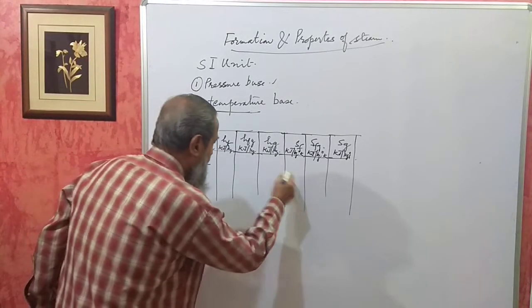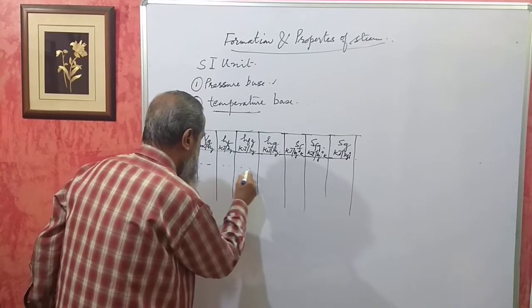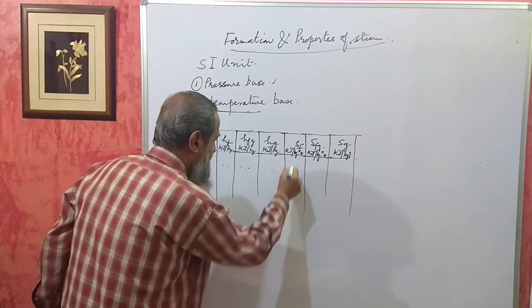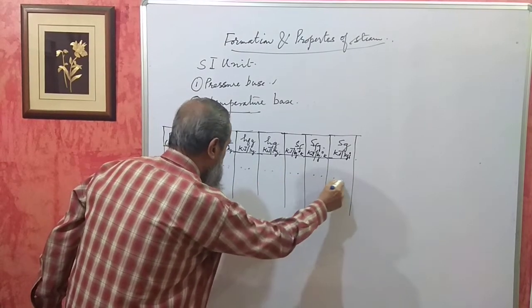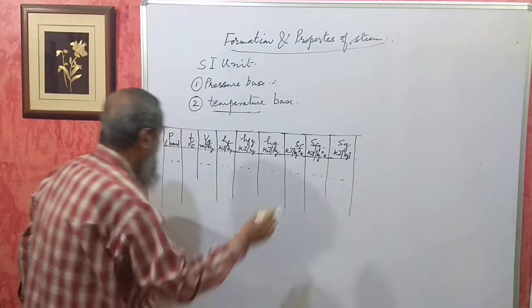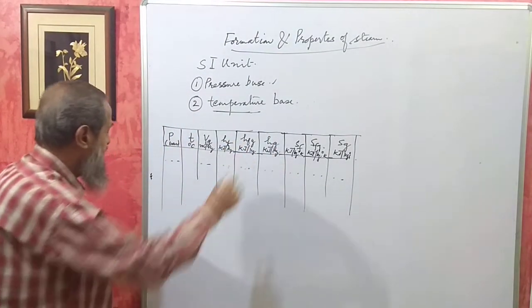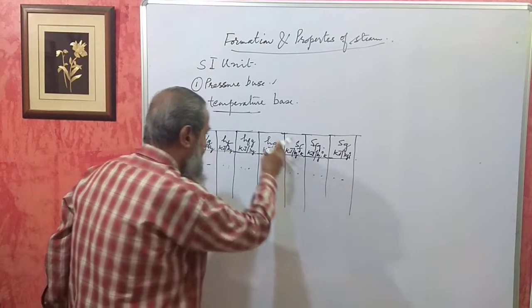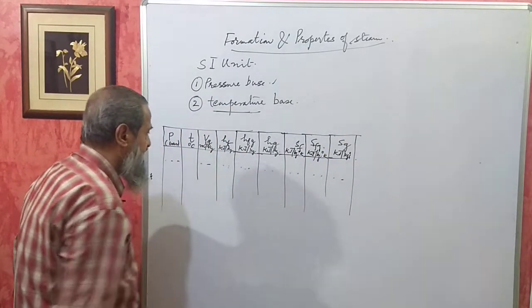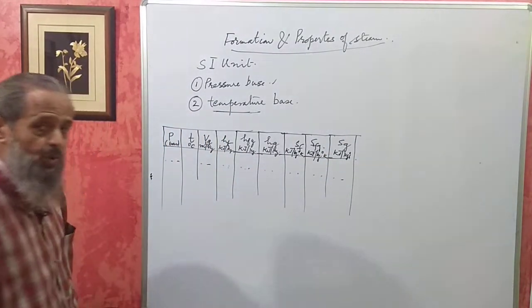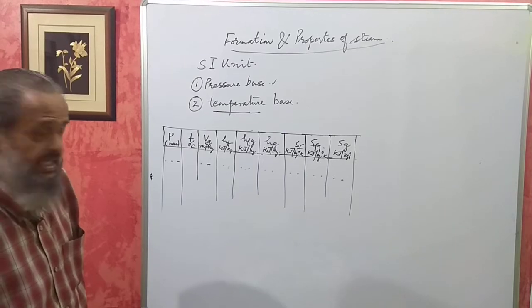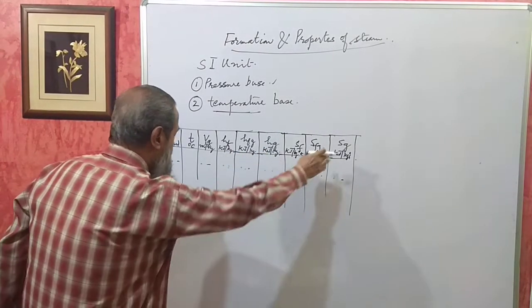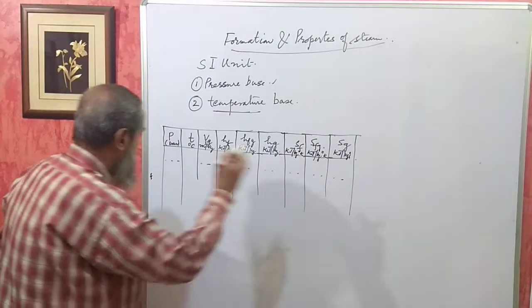Also note that SF plus SFG gives you SG, just as HF plus HFG gives HG. If it is dry saturated steam, you can get the values of HG and SG directly, provided you know the pressure — so you can get total heat and total entropy directly.